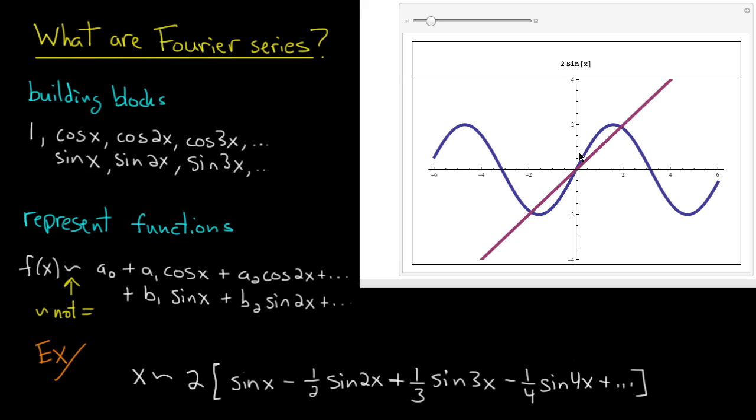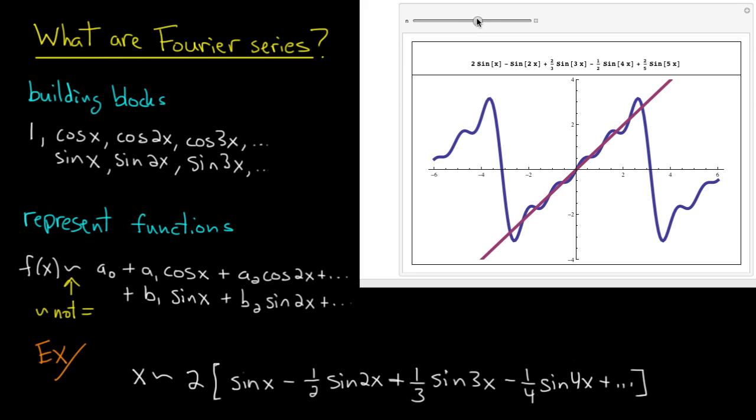It looks kind of like it's approximating x, at least in this area right here. Let's add more terms. As we add more terms it looks like the approximation gets better. There's a total of 9 terms now. And it's a pretty good approximation for x.